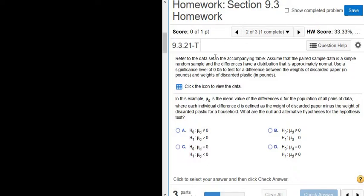So it says, refer to the data set in the accompanying table. Assume that the paired sample data is a simple random sample, and that the differences have a distribution that is approximately normal.